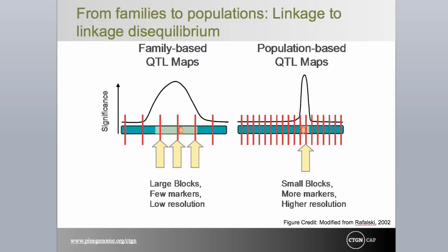It should be apparent from diagrams such as these that there are some significantly different requirements for association genetics relative to family-based QTL mapping. One obvious distinction is the number of markers required to locate the associations. Let's take a quick look at the key differences between the two approaches before moving on with our discussion of LD.